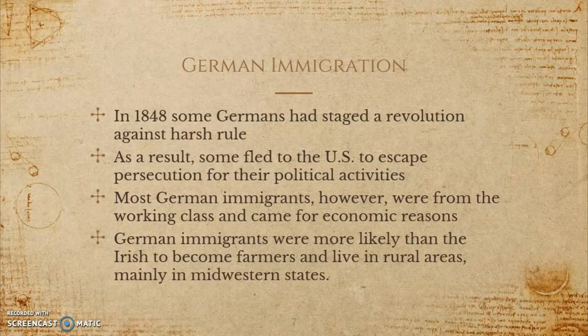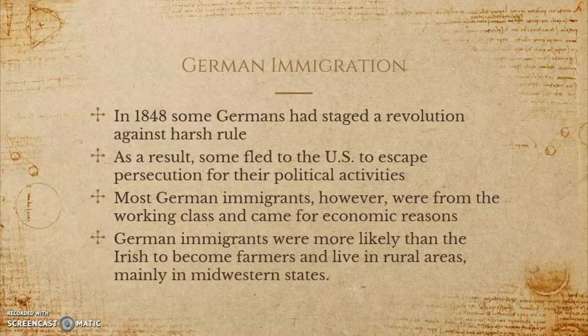Now let's take a look at German immigration to the United States. In 1848, Germans staged a revolution, and as a result some had to flee their country to escape political persecution. Even though some Germans immigrated due to political persecution, most were immigrating for economic reasons. Since the United States seemed to offer a less controlling government that gave people greater economic opportunities, it became the chosen destination for many.